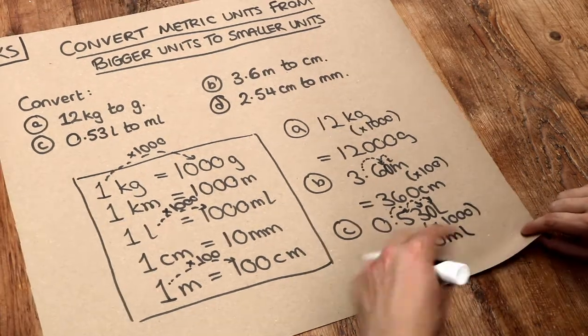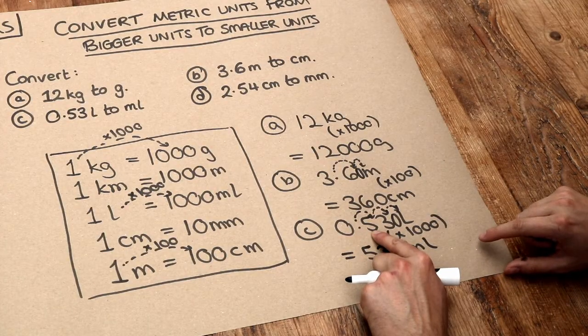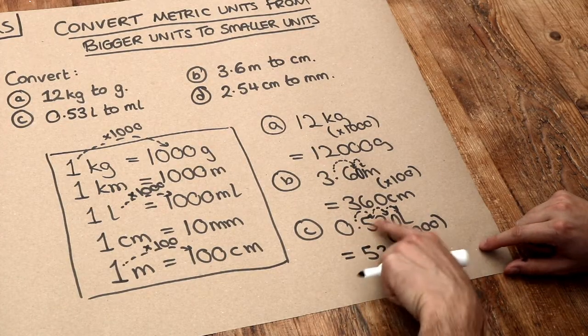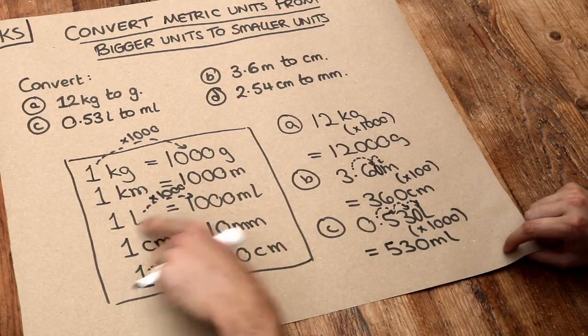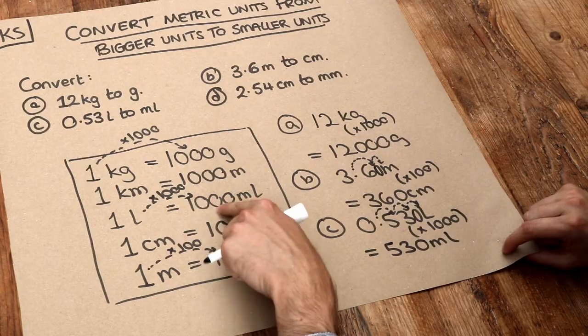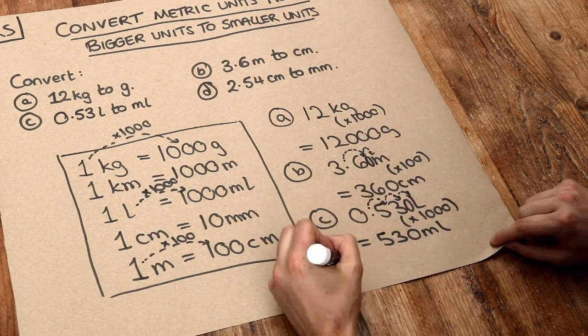And by the way, that feels kind of right. Because if you think about it, 0.5 is half, isn't it? So this is roughly half a litre. Now if it is a thousand millilitres, then half a litre would be half of that, which is 500 millilitres. So 530 millilitres feels right in terms of scale.